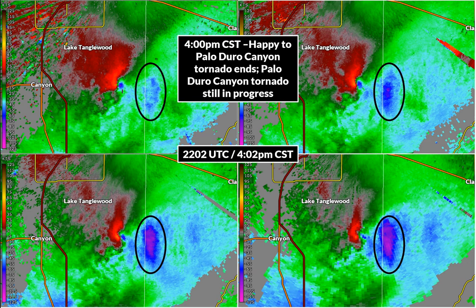One thing to note: we have this area of strong inbound velocity — motion toward the radar — just to the north of our image, kind of wrapping around the apparent circulation of the whole storm. If you head back a little bit in the video, you'll see that occurring before the Palo Duro Canyon tornado gets started. So guess what's going to happen here over the next few minutes.